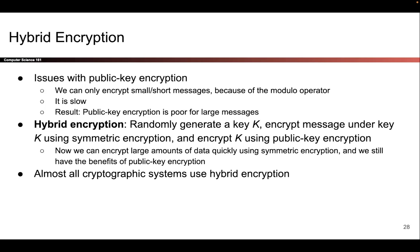One issue is that public key encryption is slow. Operations like taking exponents mod p, multiplying two large prime numbers together, or selecting two large prime numbers are all far slower than symmetric key operations like shifting bits or taking XORs. Those are much faster.